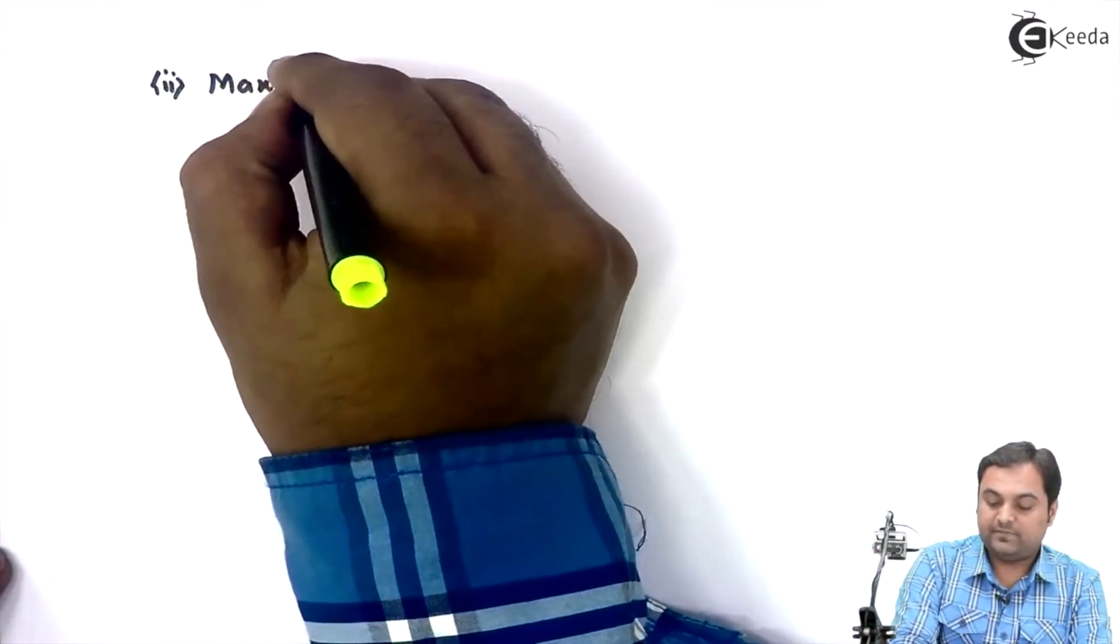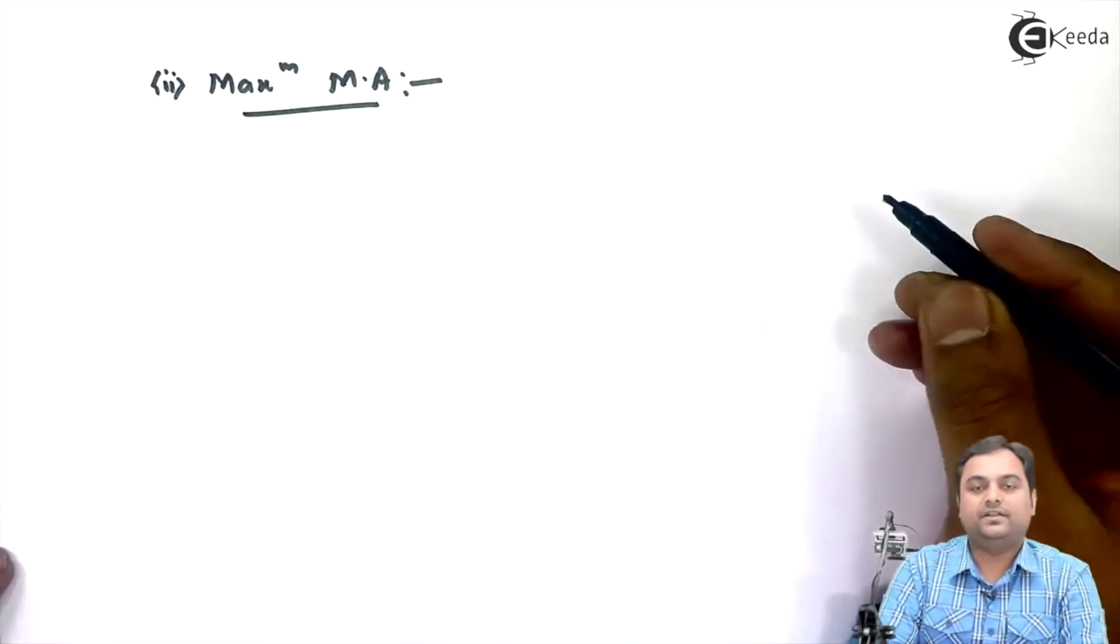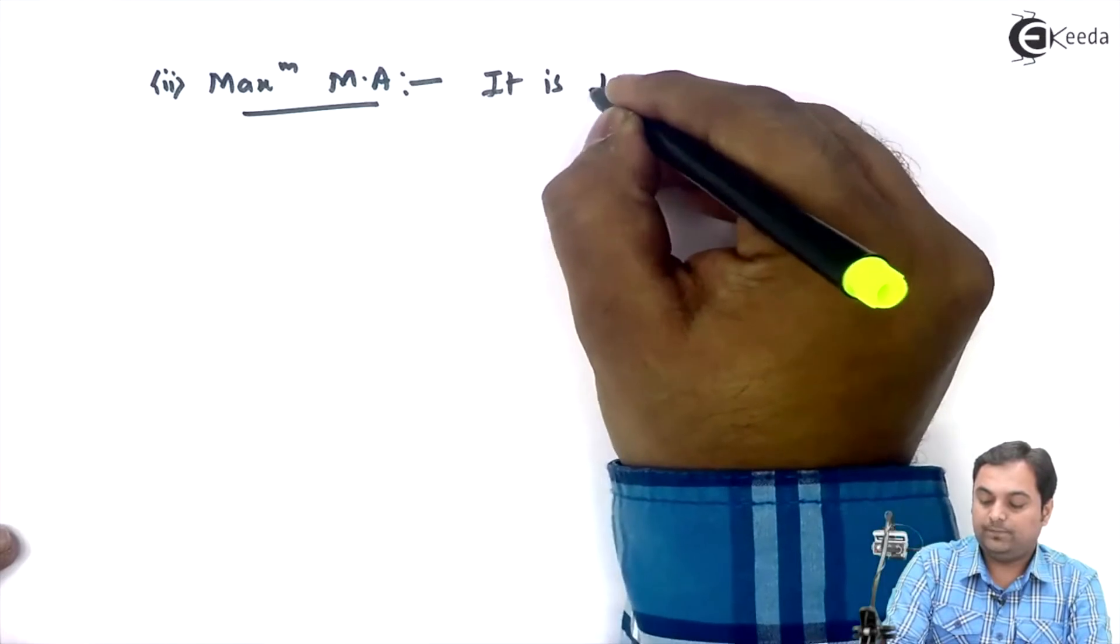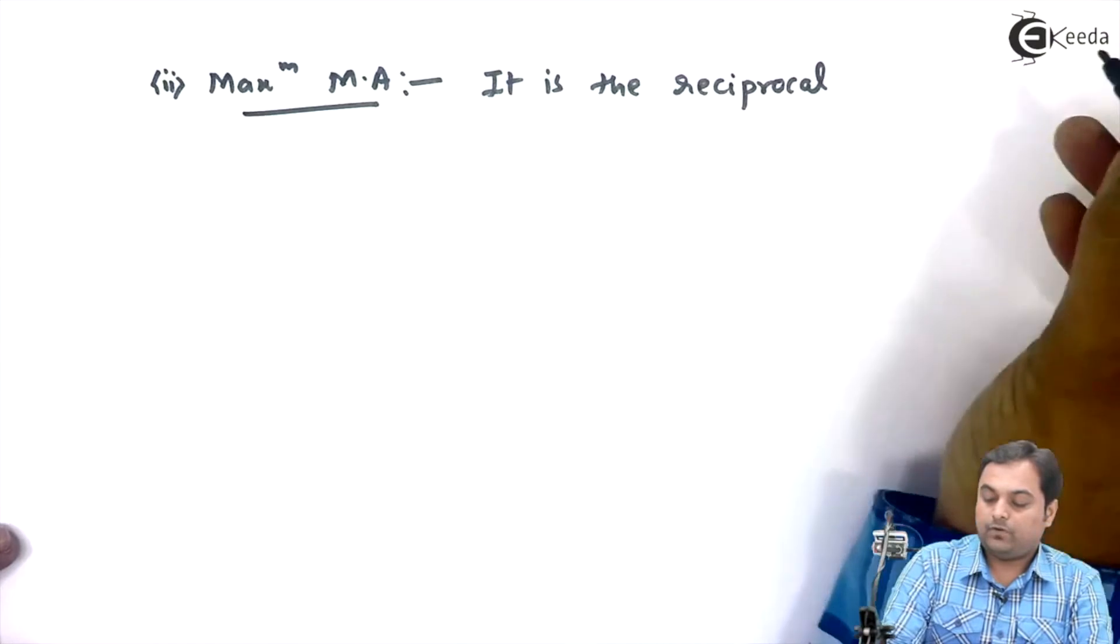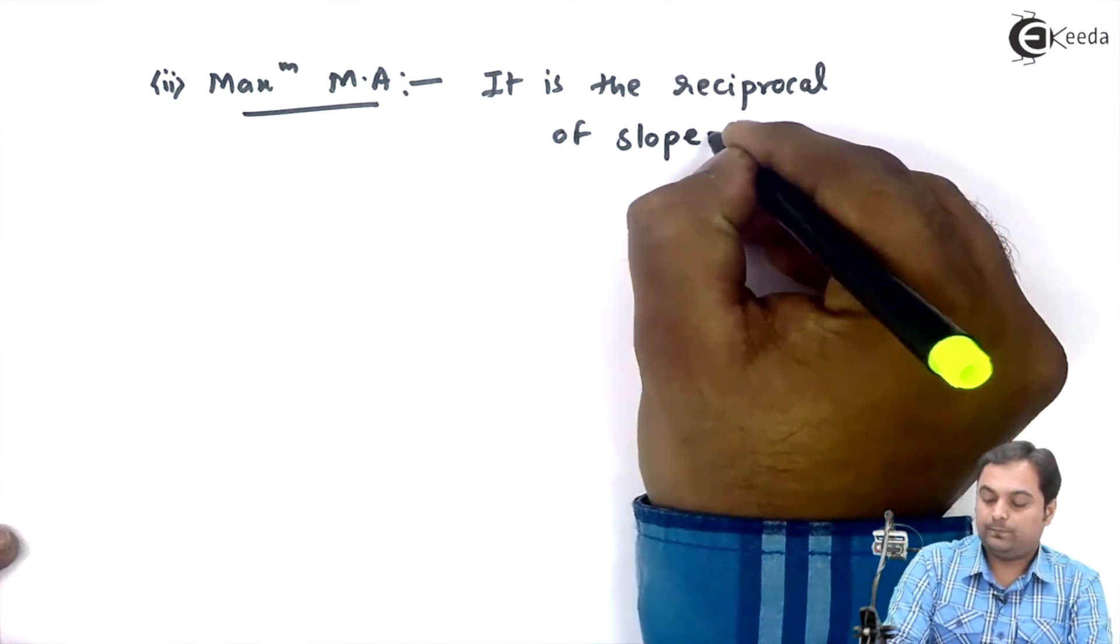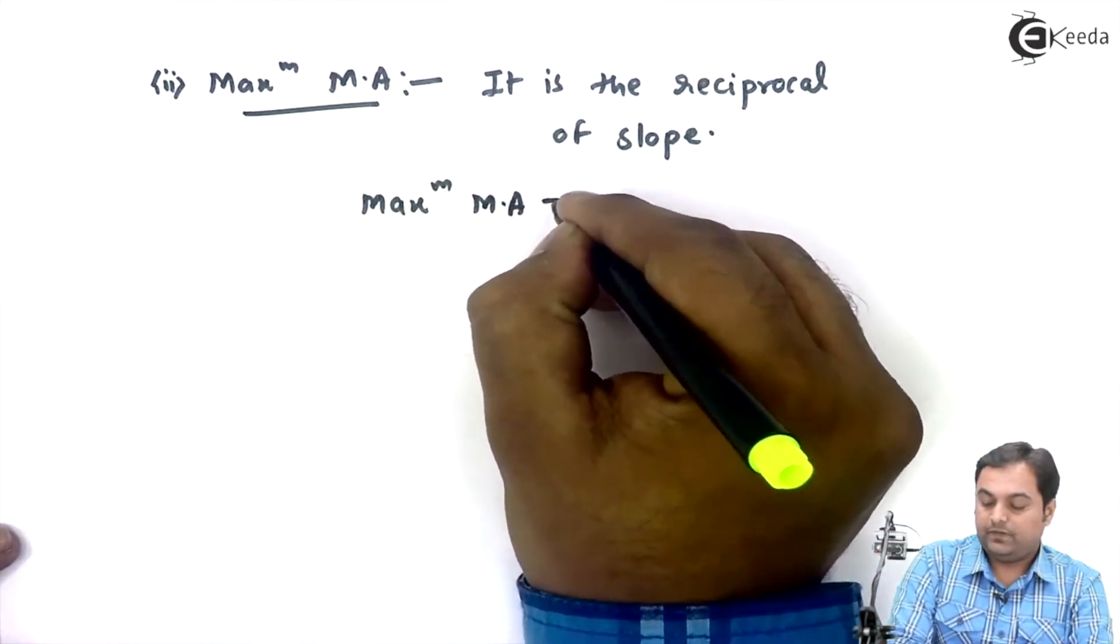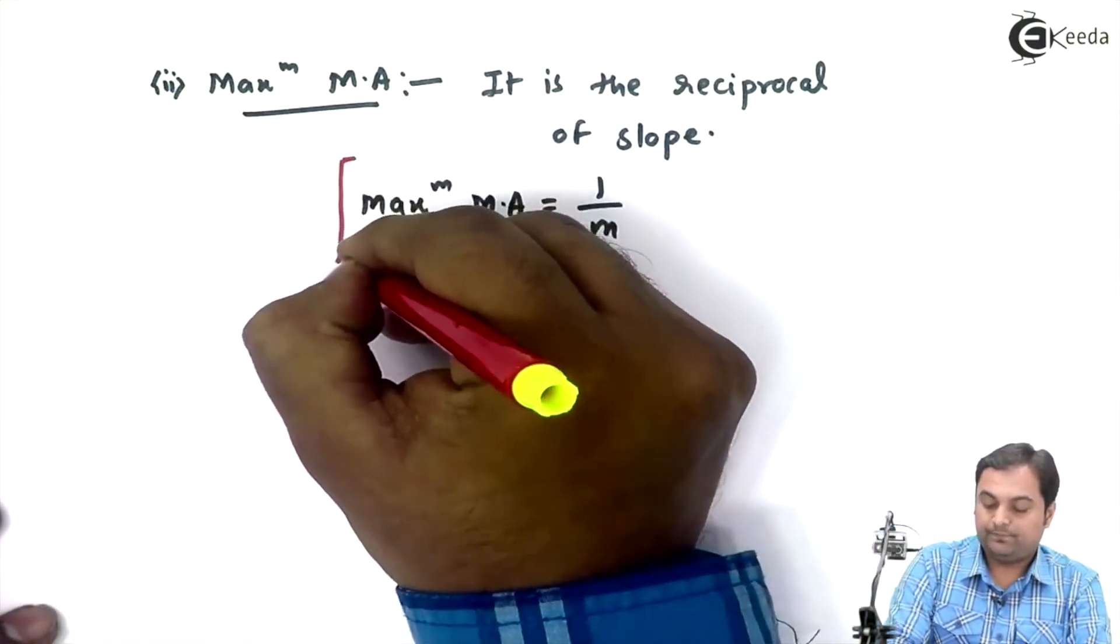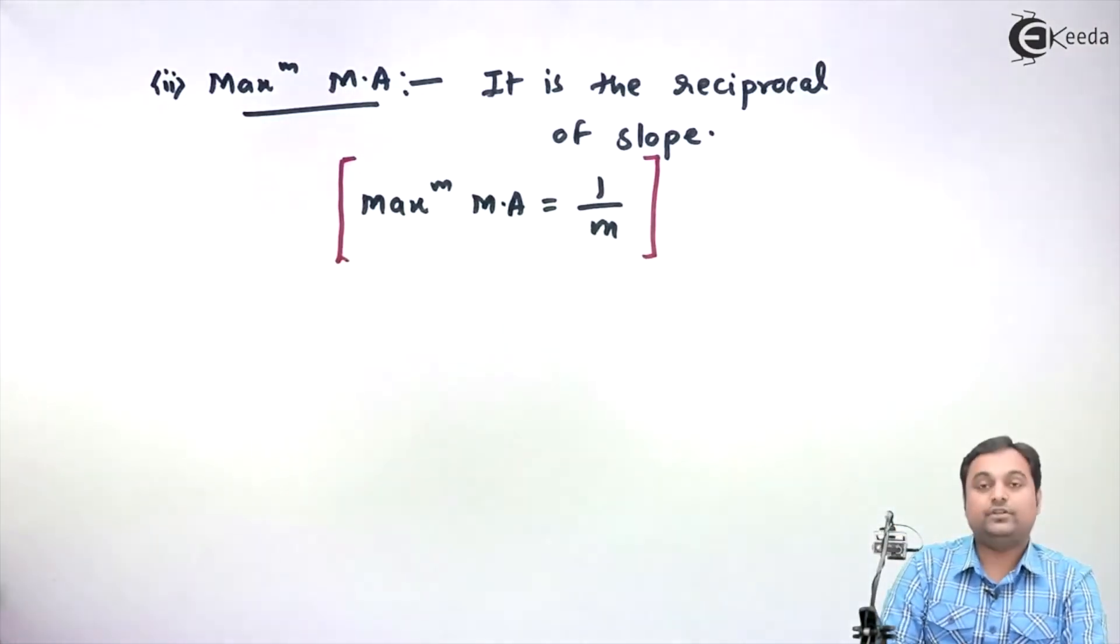I'll write it as maximum MA because wherever I write MA it indicates mechanical advantage. It is the reciprocal of slope. It means maximum mechanical advantage is equal to 1 upon M, that is it is the reciprocal of slope, and it also doesn't have a unit.